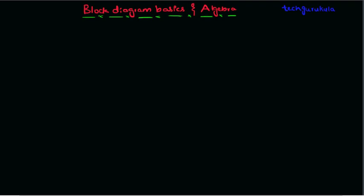In this video we're going to see block diagram basics and block diagram algebra. To start with, the basic elements of a block diagram: a system can be represented with a box with the transfer function written inside it. Let's say the transfer function of the system is G(s), the input is R(s), and the output is C(s). This is how we represent a block diagram of a particular system.